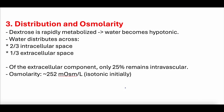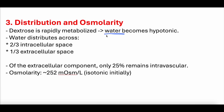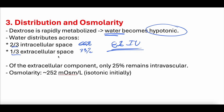To summarize distribution: dextrose is rapidly metabolized, making D5W free water — hypotonic. It distributes across the intracellular space (66%, two-thirds) and the extracellular space (33%, one-third), leaving only about 8% in the intravascular space. Of the extracellular component, 25% remains intravascular — 25% of the 33%. D5W is initially isotonic at 252 milliosmoles per liter; body fluid is about 290 milliosmoles per liter. But once that dextrose is metabolized, it becomes rapidly hypotonic.